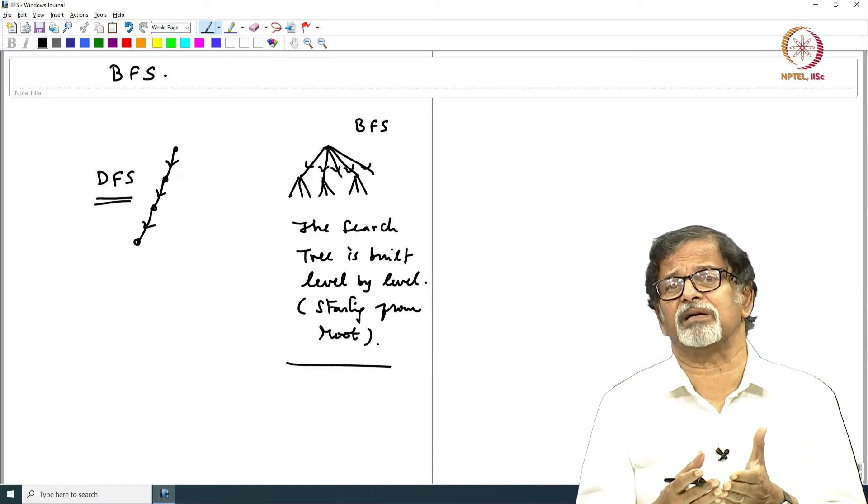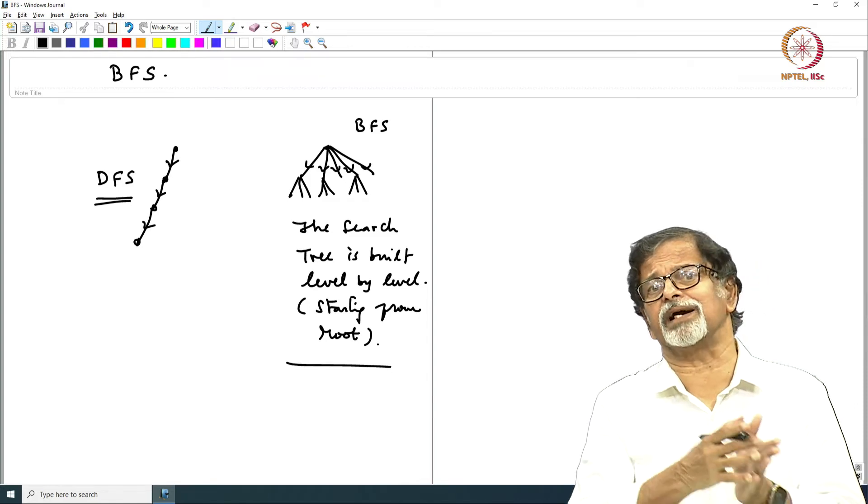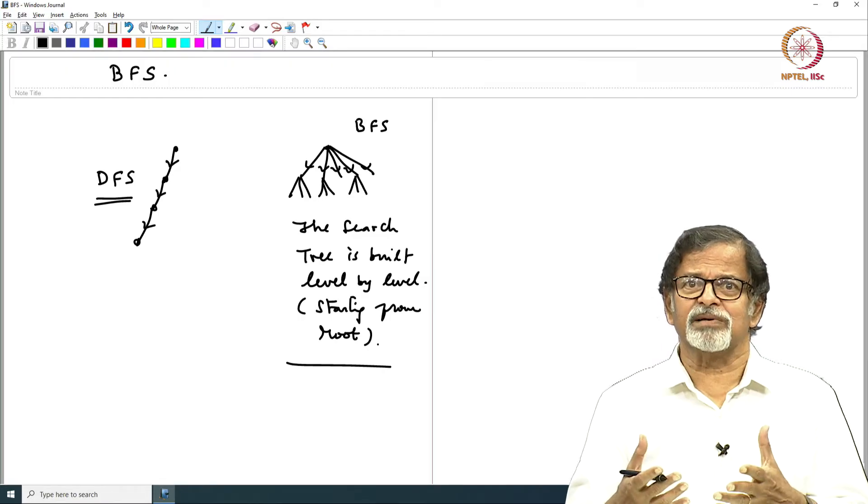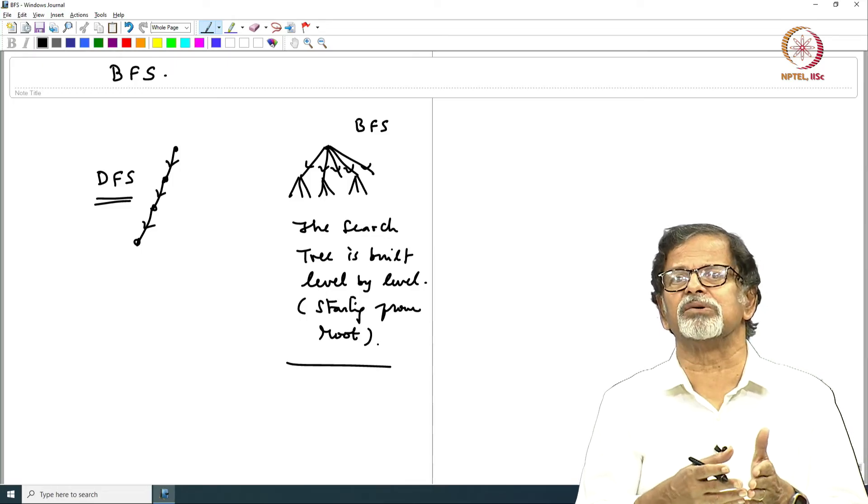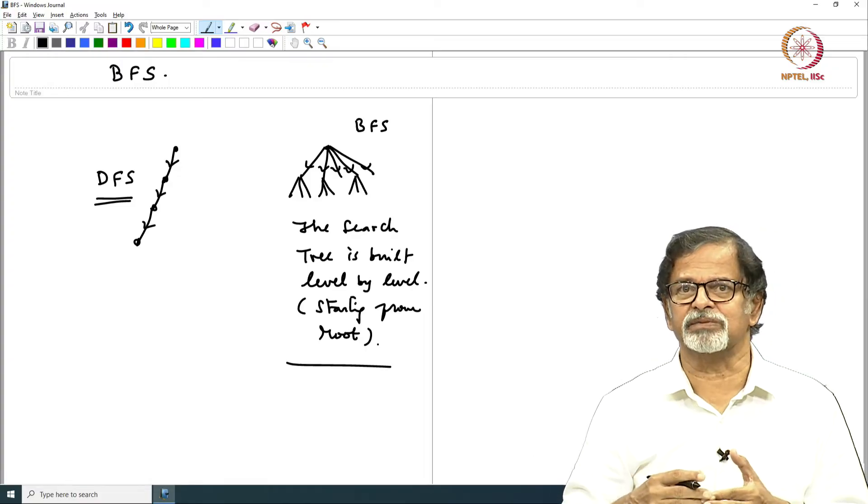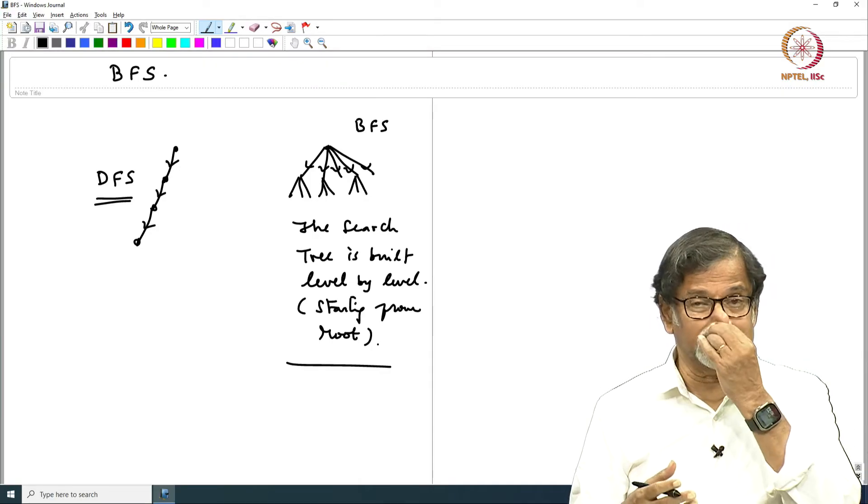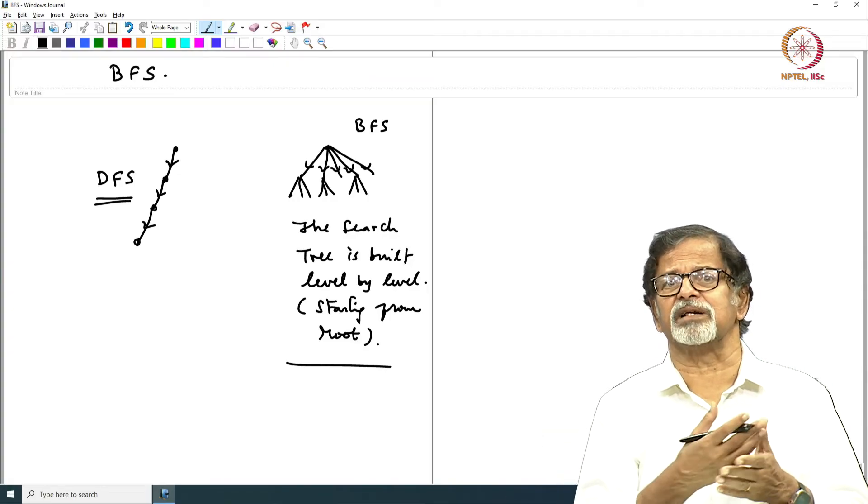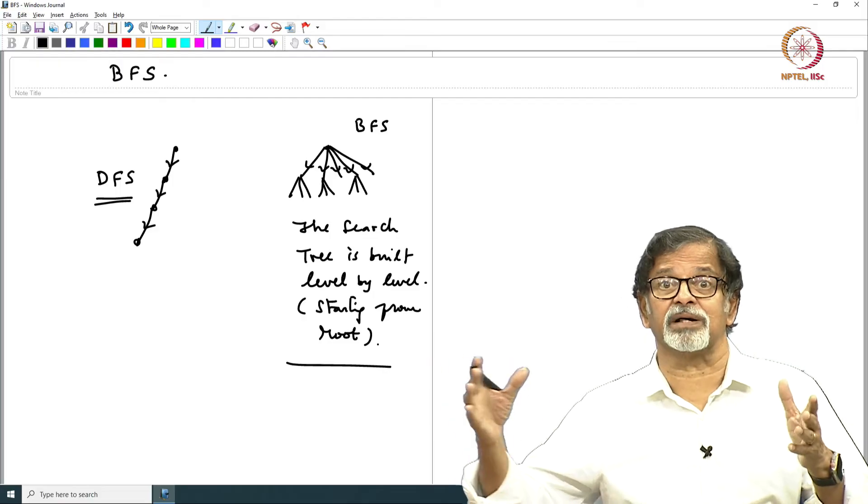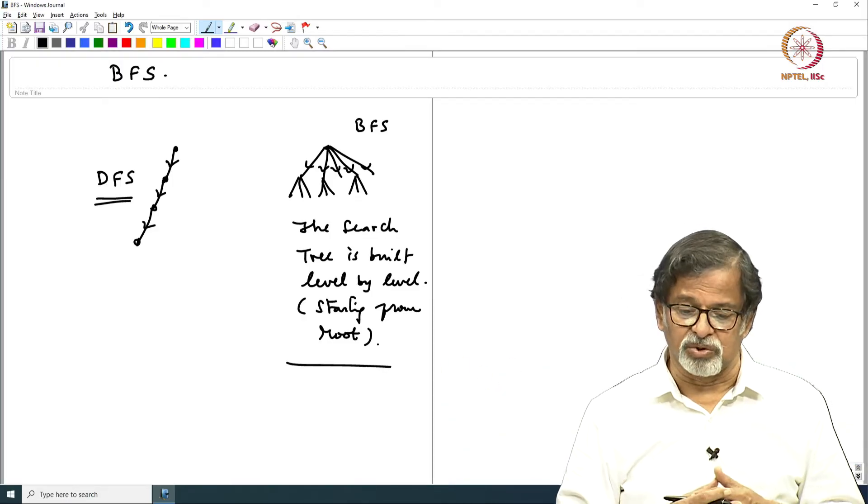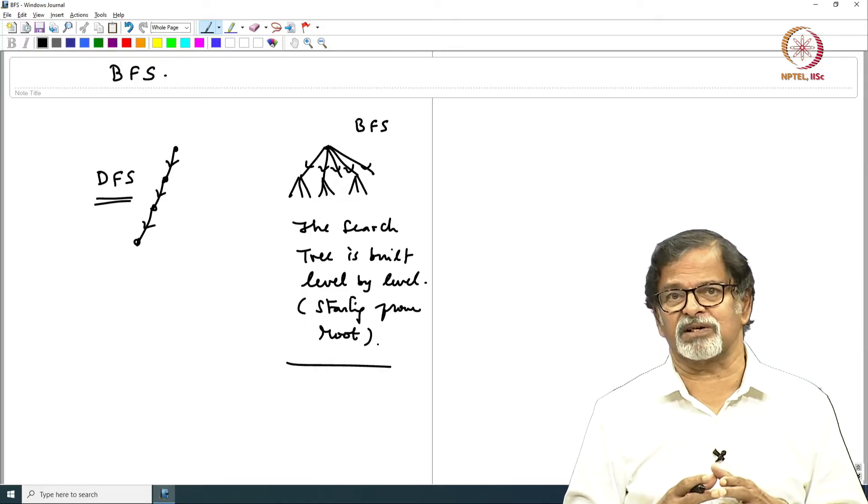So how do we ensure that we are building level by level? We would like to finish certain things earlier and then take up certain things later. In that case we have to put the task in a queue. Whatever you want to do earlier you put it first in the queue, and whatever you want to do later you put it in the rear of the queue. The queue is processed by things that are in the front of the queue and thereby an order is imposed. All the things in a particular level should be queued up so that when the turn comes all of them are getting expanded.